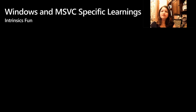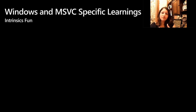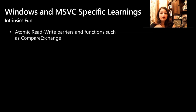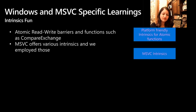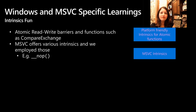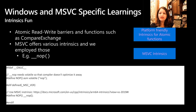Moving on to Windows and MSVC, there are a lot of intrinsics that the static compiler offers, and we worked with the MSVC team to learn more about them. I already talked about the read-write barriers. We also incorporated a few built-ins — for example, underscore no-op — where we check for the compiler and then use the MSVC intrinsic for no-op.